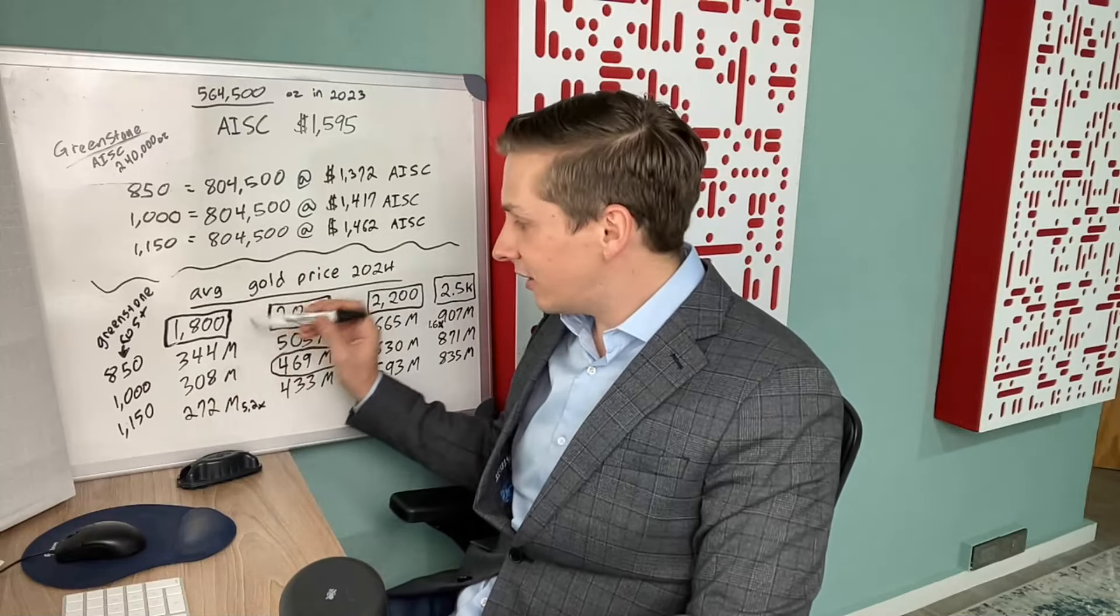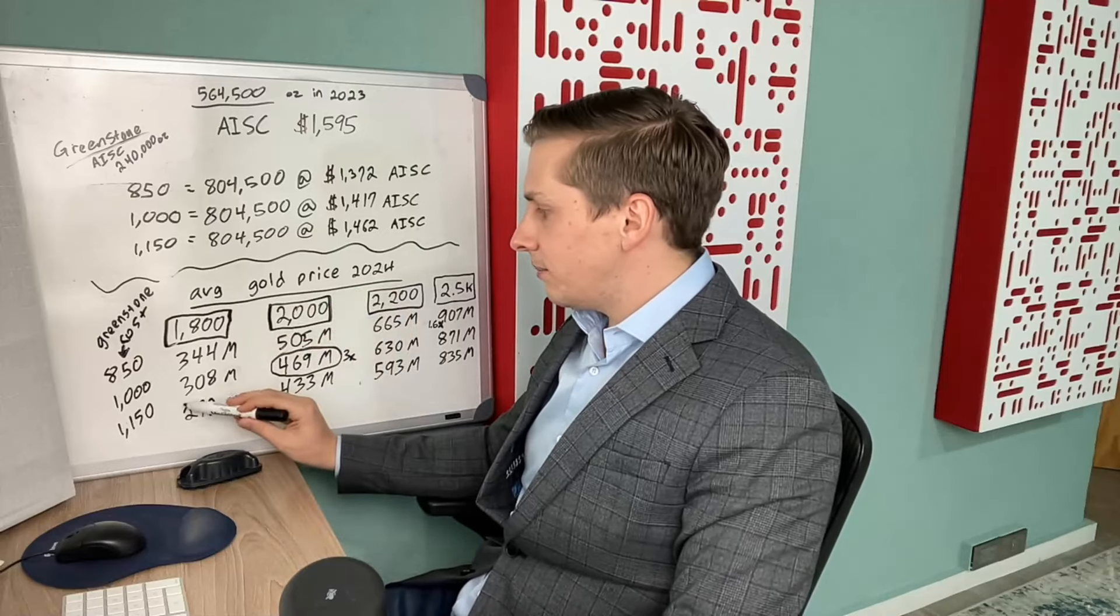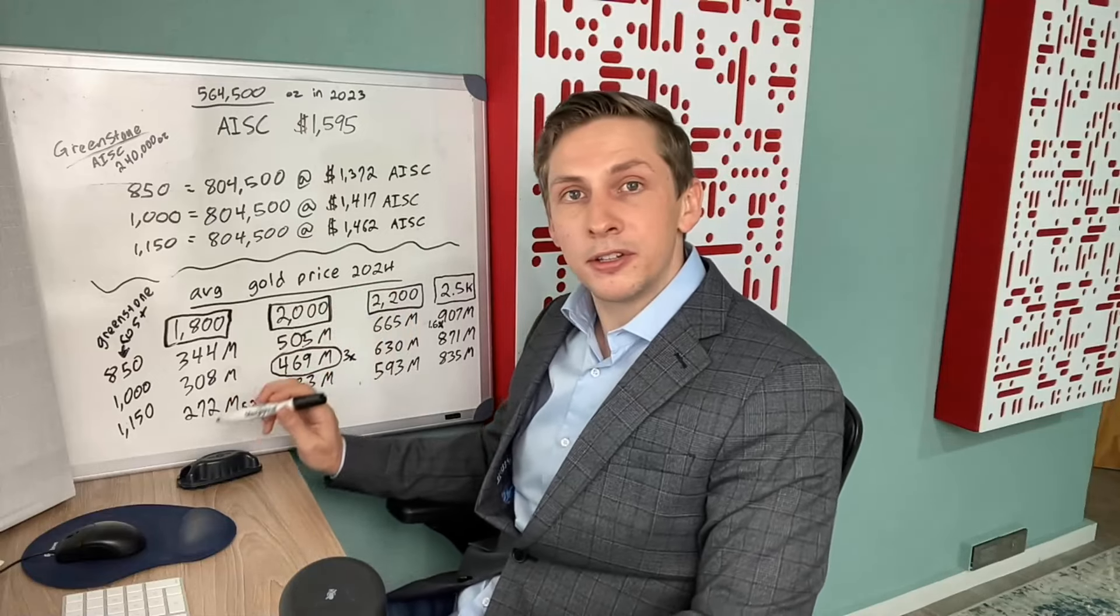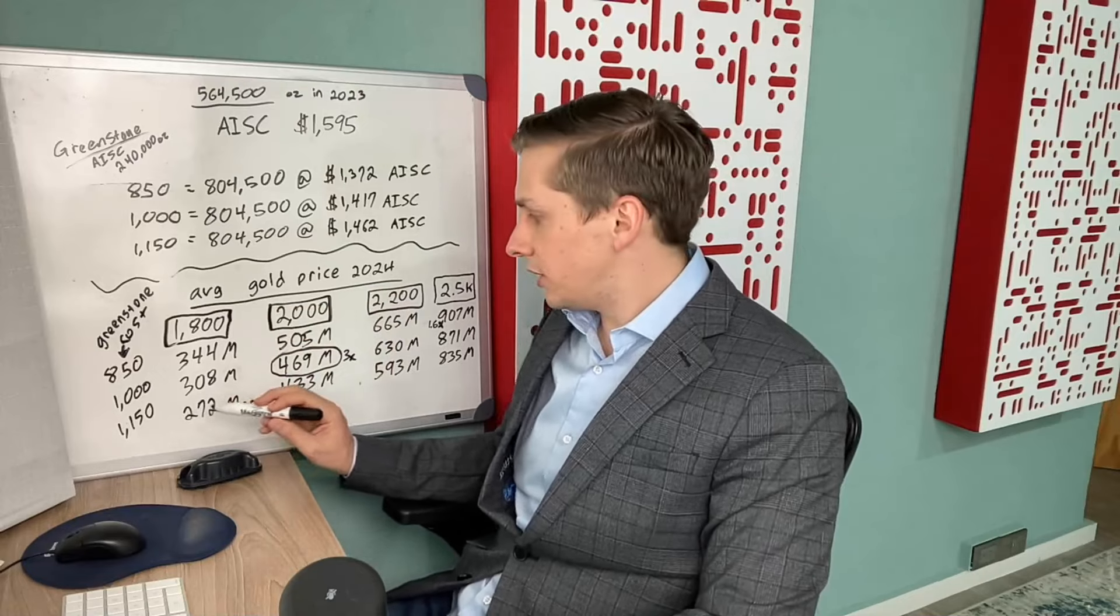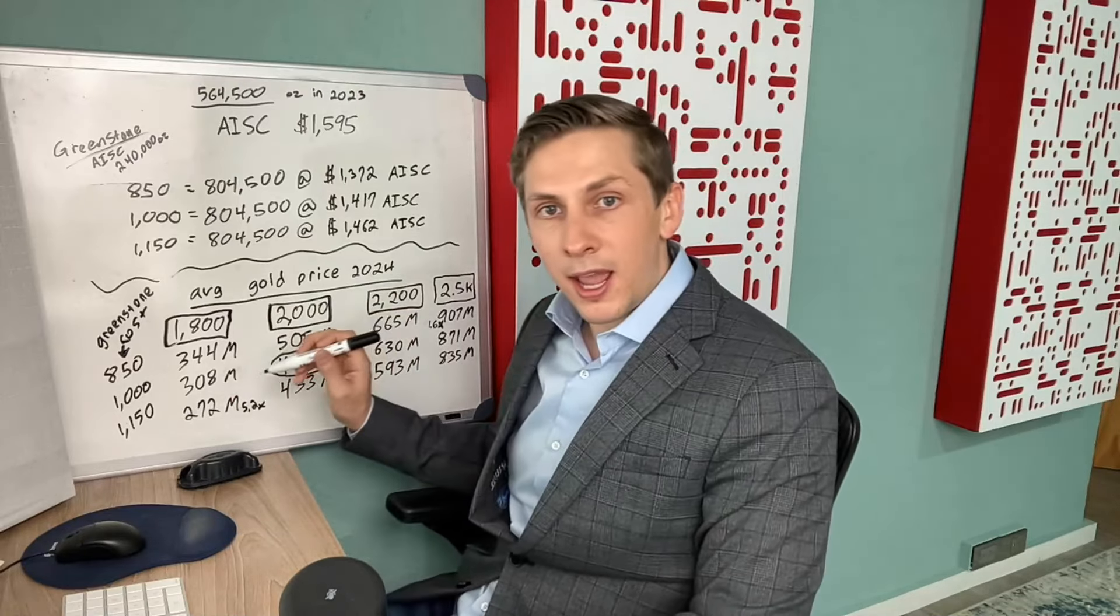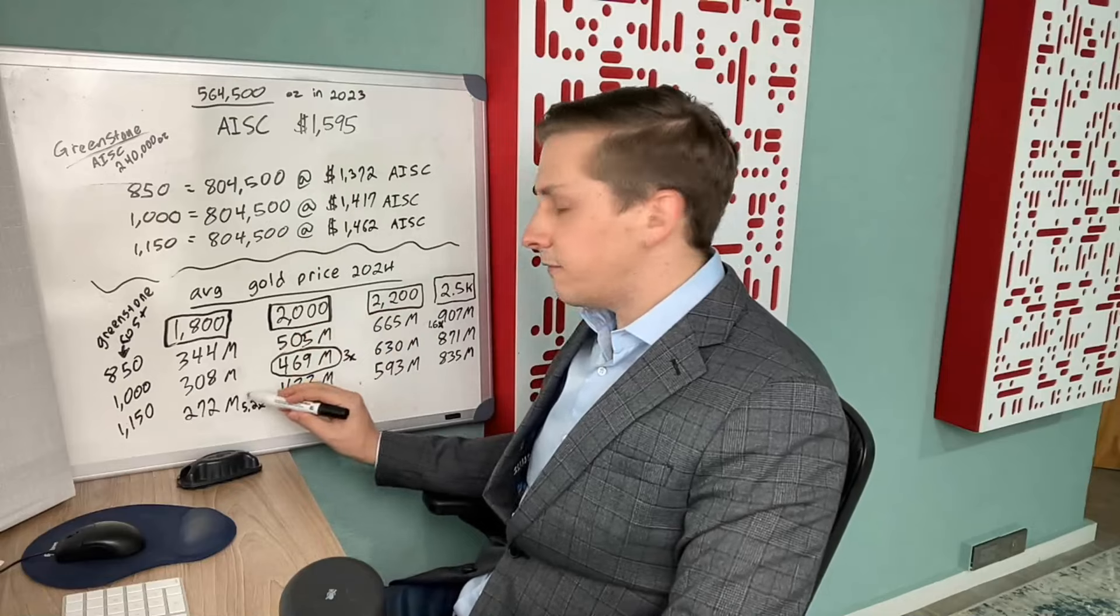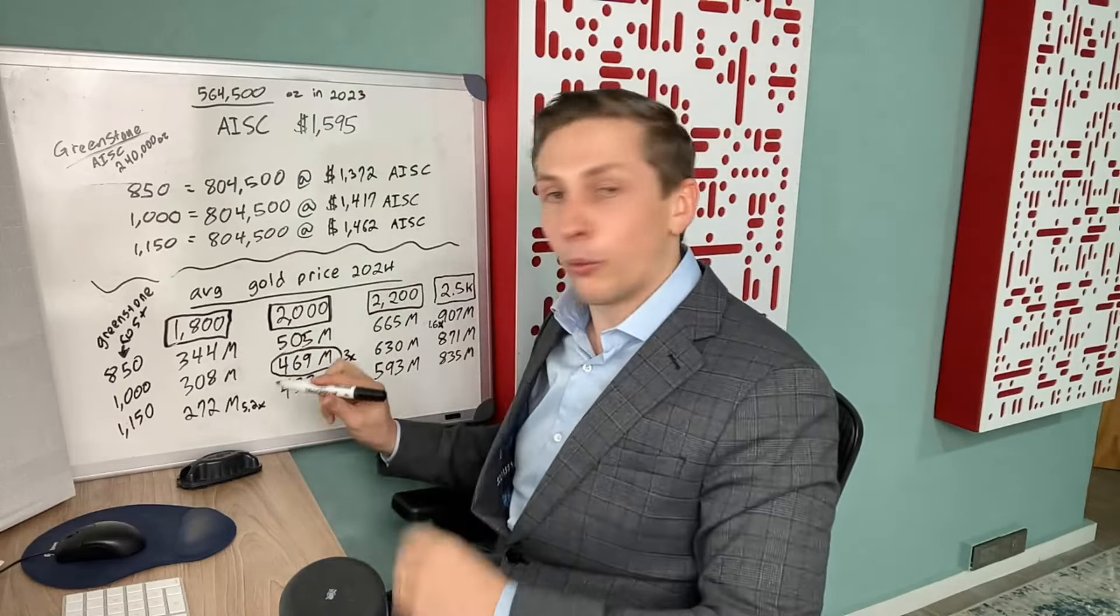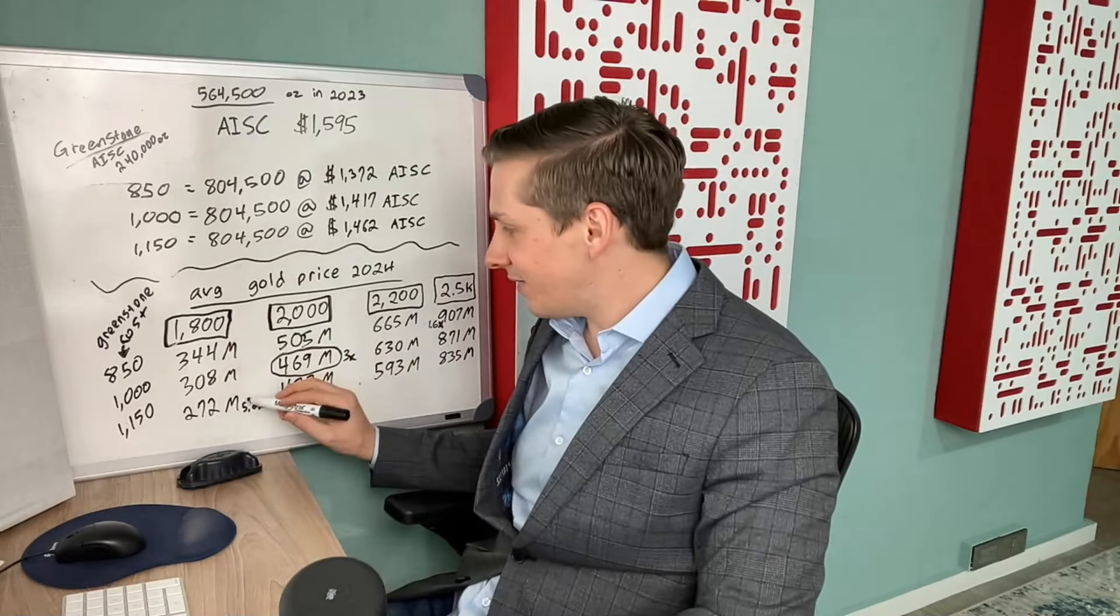If Greenstone comes in producing at $1,150 and the average gold price is $1,800, the company will have cash flow of $272 million a year. Compared to the market cap today, that is a 5.2 times cash flow multiplier. So even in the worst case scenario after Greenstone is fully in production, we have a pretty low cash flow multiplier indicating that the stock is pretty cheap.